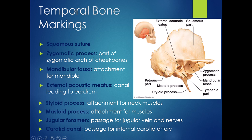The styloid process is the skinnier one and the mastoid process is the blunter of the two processes. These are attachment points for some neck muscles and some chewing muscles.